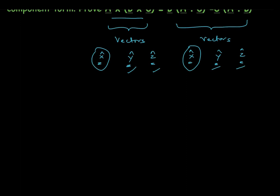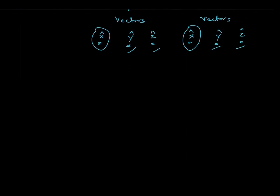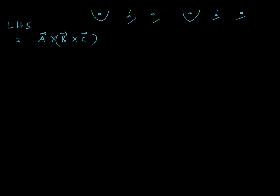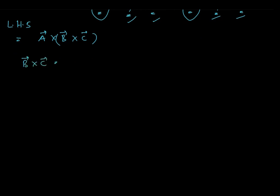Once we understand the approach, we can start solving right away. Let's first find A cross (B cross C). We will start with the LHS. Let's write down what B cross C is. From the vector cross product definition, we know that B cross C is written as a determinant with unit vectors X, Y, Z in the first row, then B_X, B_Y, B_Z in the second row, and C_X, C_Y, C_Z in the third row.